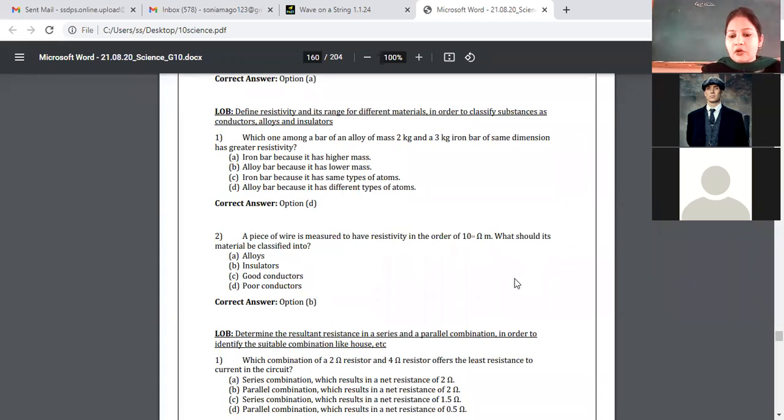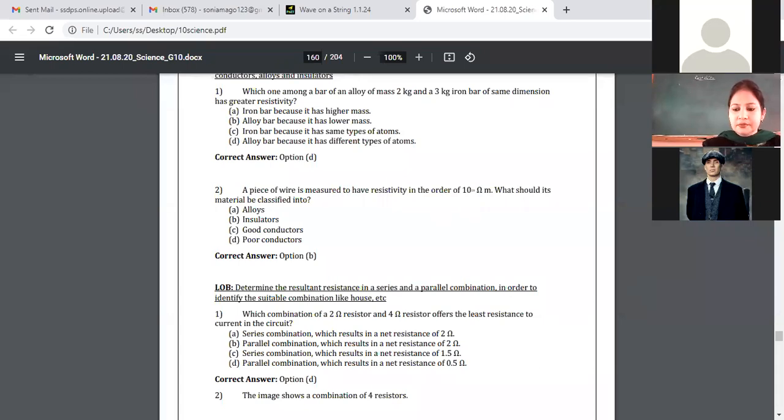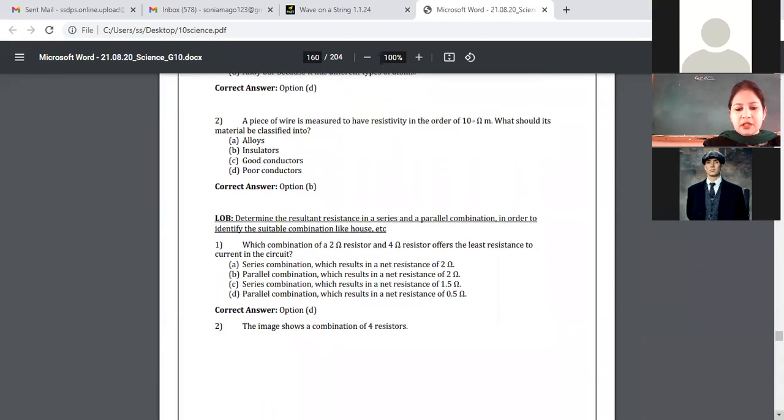Or 2 ohm to ho nahi sakta. The answer 4 by 3 is how much? 4 by 3 is 1 point something, right? So yaha pe answer kya hai, let us see. D option hai. But net resistance 0.5 to nahi hai.